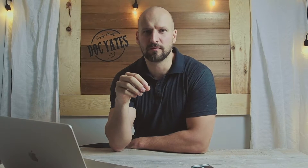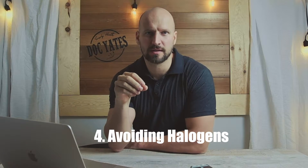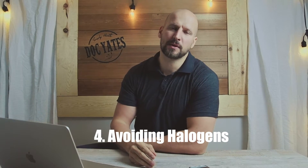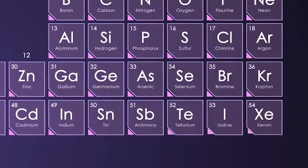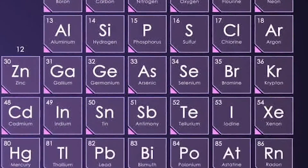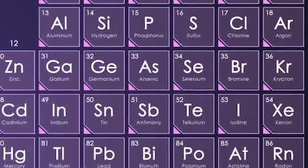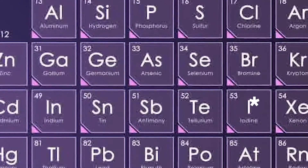The fourth point is about what toxins to avoid, typically called the halogens. They're in the same family on the periodic table as iodine. Things like fluoride, bromine, and chlorine can all bind to the receptors where iodine would typically bind and displace it, preventing the beneficial effects iodine needs to have on the thyroid gland, lymph tissue, and breast tissue. Avoiding fluoride, bromine, and chlorine is very important for optimal thyroid function.